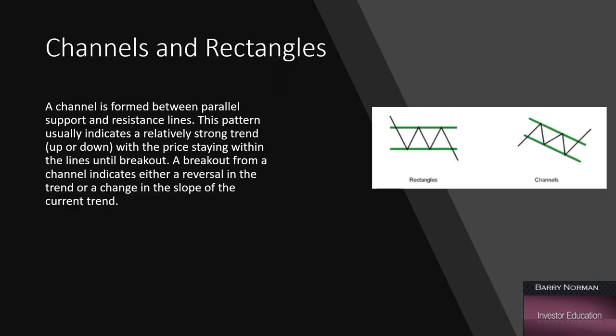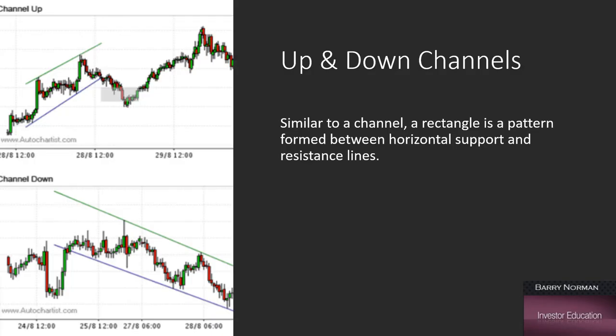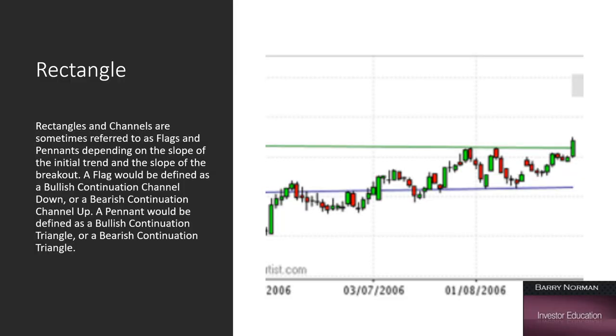But we also get the same thing in what we call a rectangle or a channel. Now, rectangles, I don't really trade. Rectangles are more or less triple tops and triple bottoms. And channels are support and resistance both moving downward at the same degree. I don't even know if I classify them in my pattern interpretations. But they are well known and they work extremely well. And we have up channels and down channels. And then we go on and we have rectangles. So, like I said, a rectangle just looks to me like double bottoms and double tops.